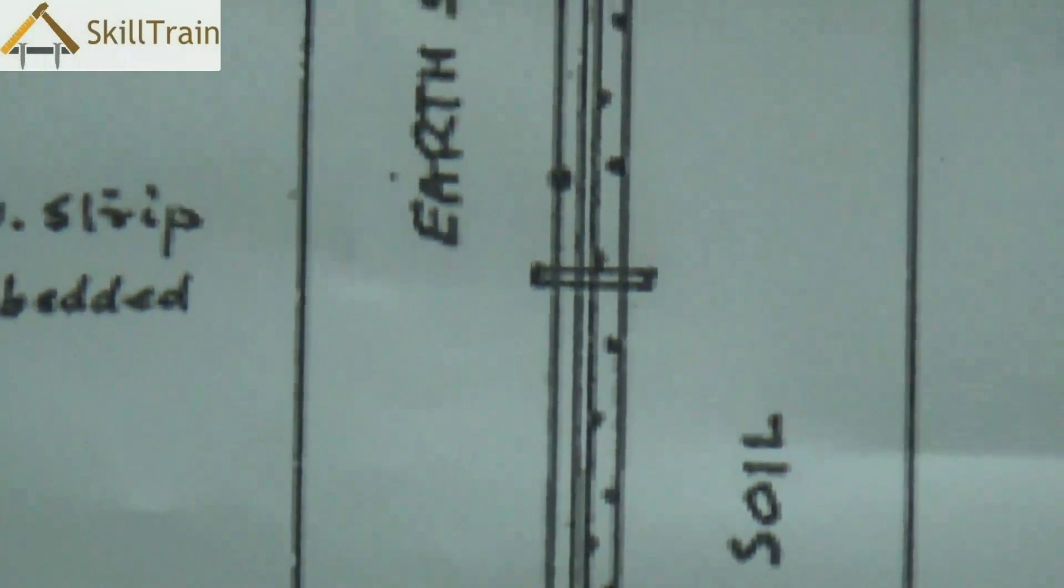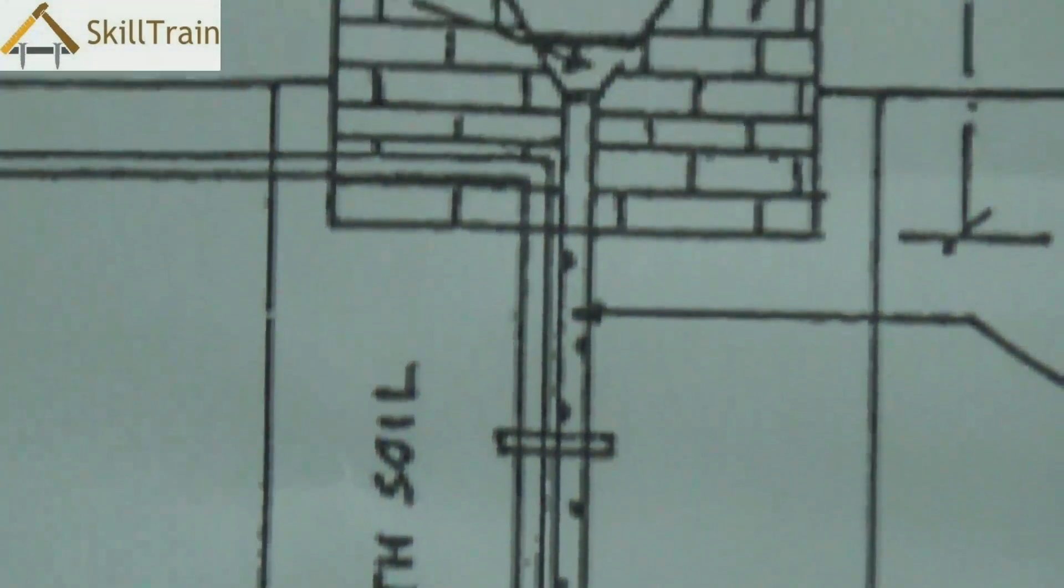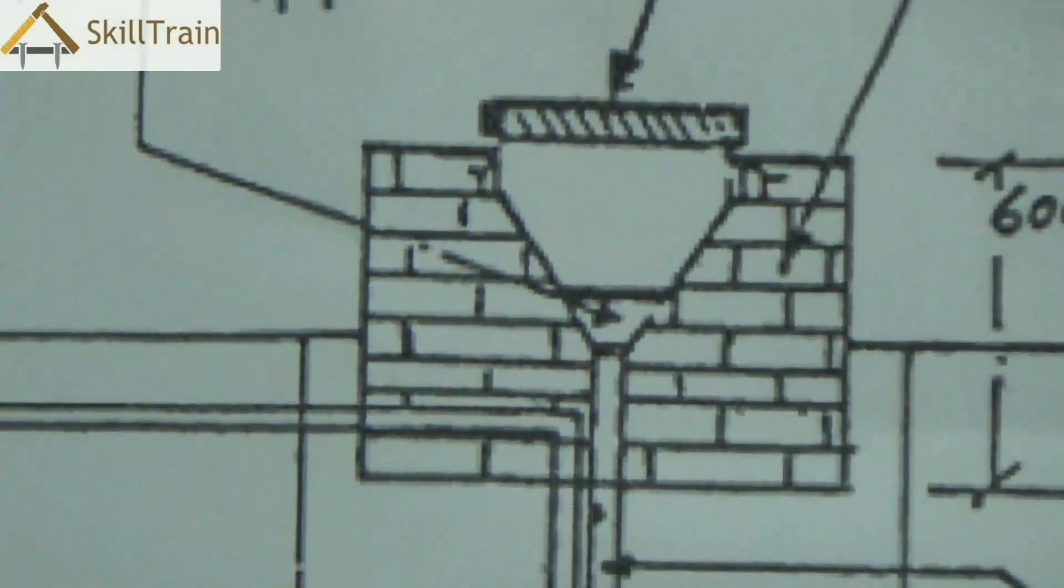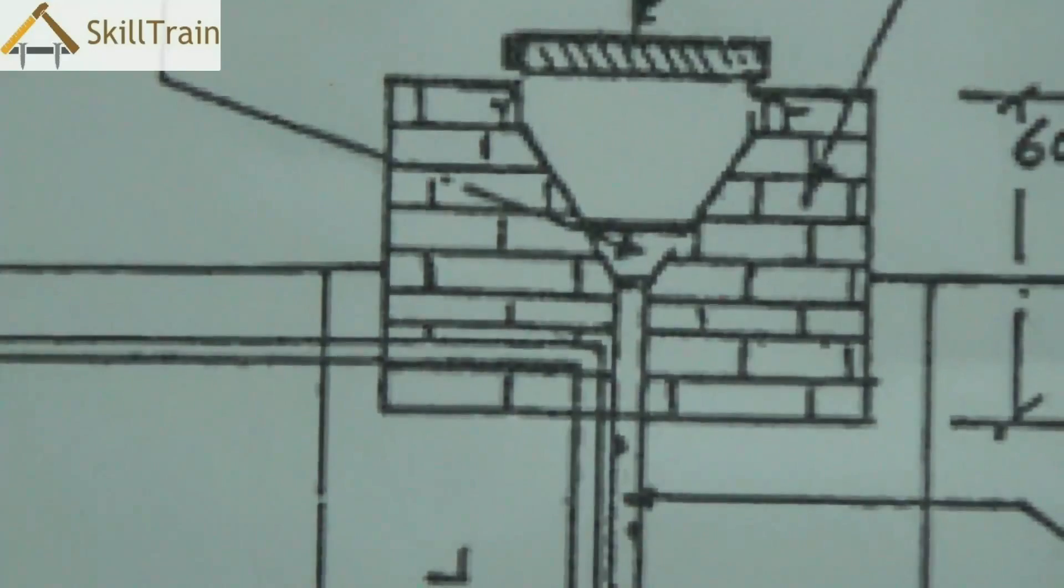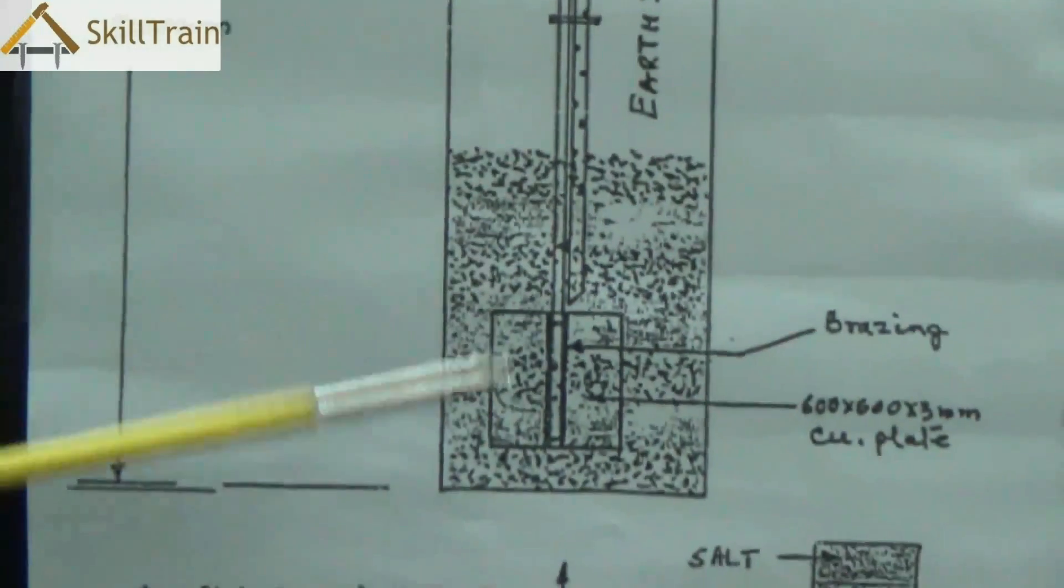The plate earthing requires water to be poured in to ensure that the humidity is maintained internally inside the pit and so regularly we need to open the pit and ensure that there is water poured into it to keep the humidity maintained inside the pit.